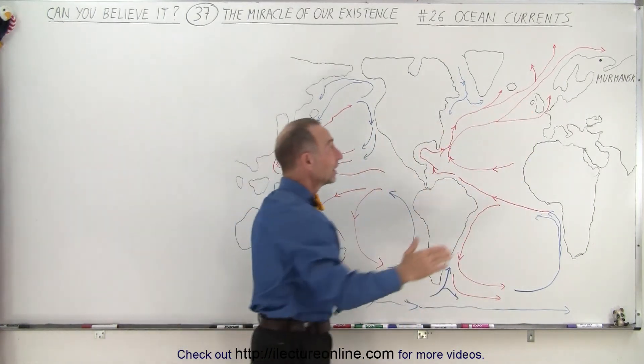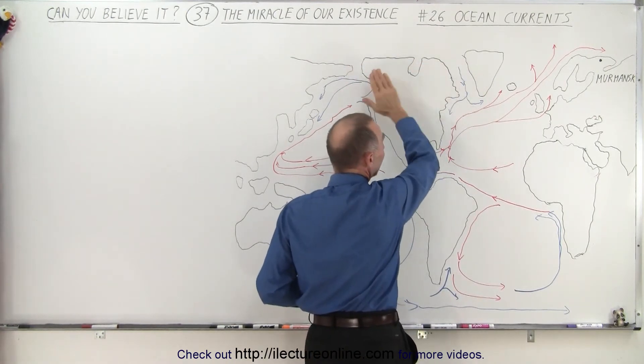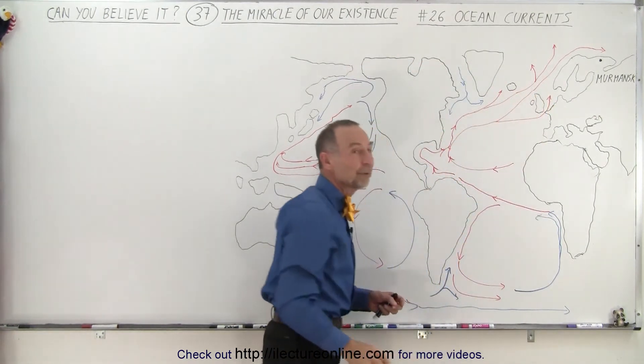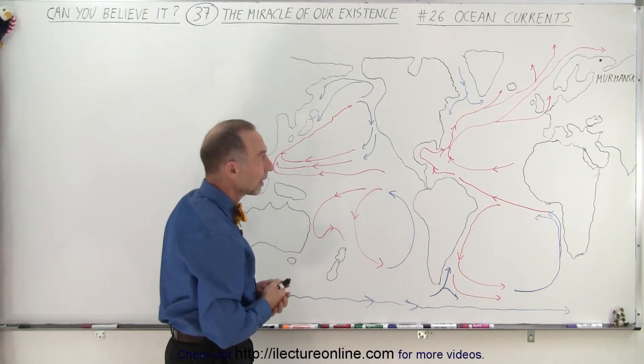If it wasn't for that, these regions of Europe would be just as frigidly cold as the northern regions of Canada, and therefore life would be virtually impossible for people, and there would be very little animal life there as well.